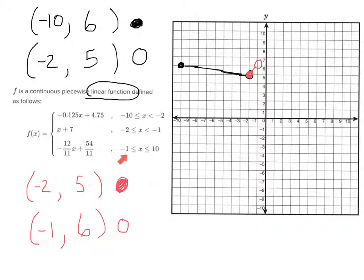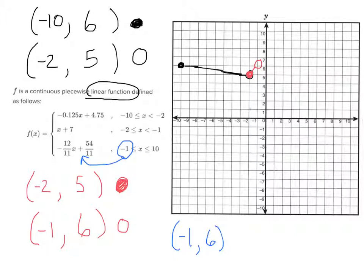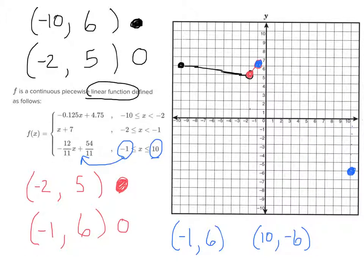We're almost done. Now I need to take negative 1 and plug it into the third function, and also plug in 10. When we plug negative 1 into this function, the output is 6, so that's the point negative 1, 6, which is a closed circle. When I plug 10 in, the output is negative 6, so I graph the point 10, negative 6. Then I connect those two dots with a straight line.